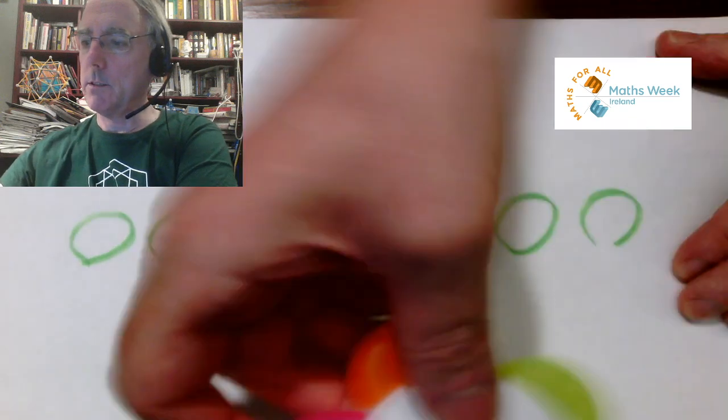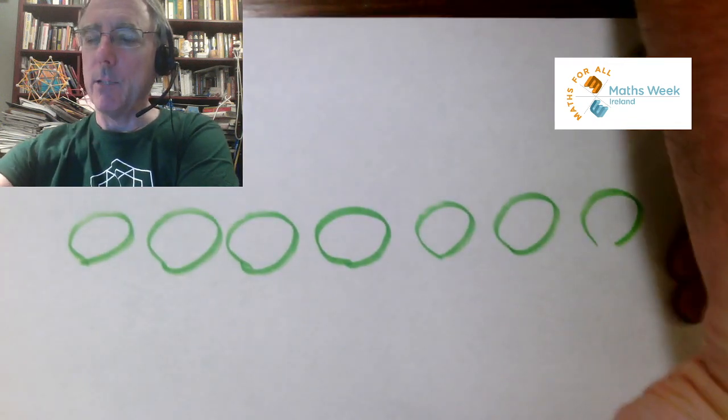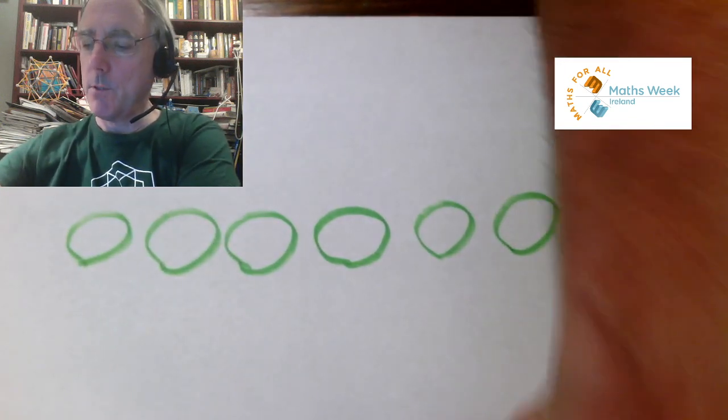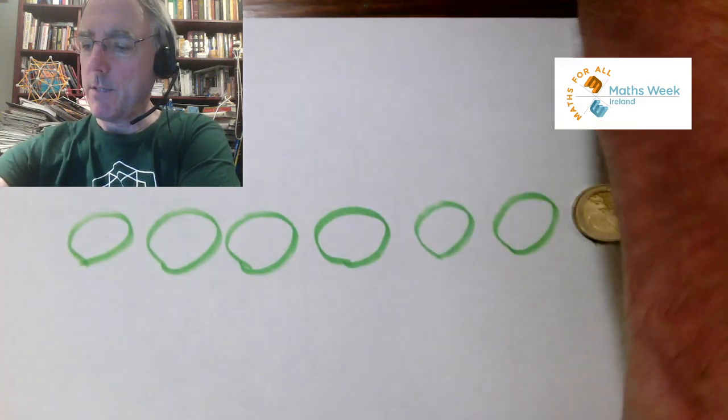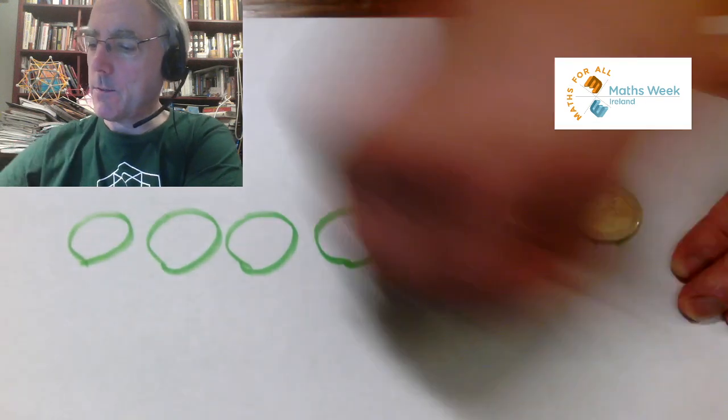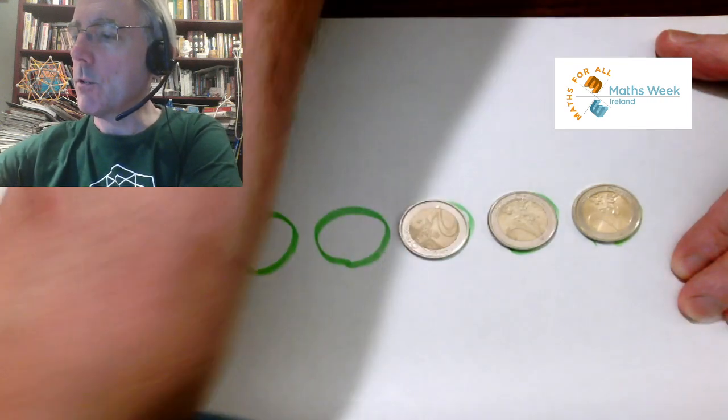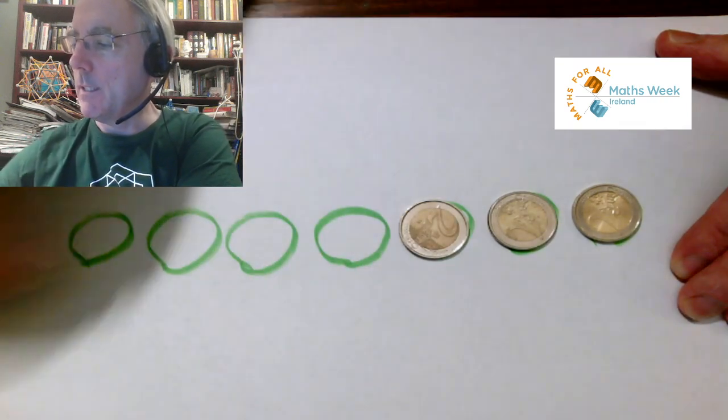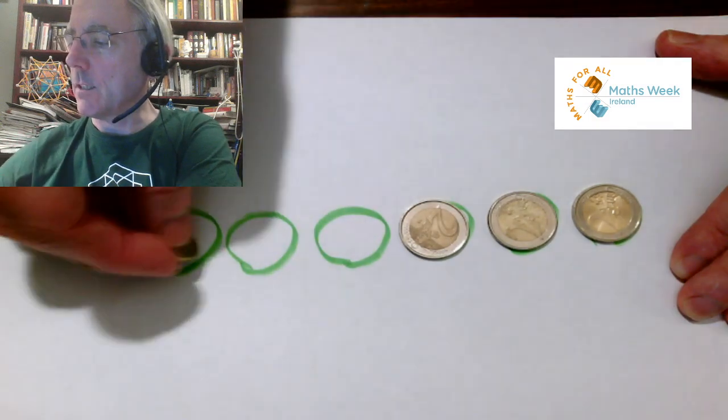And that's our lily pads done. Now we need our frogs, so I'm going to use whatever's at hand. In this case I could find three one-denomination coins and three of another, and these will serve as our frogs.